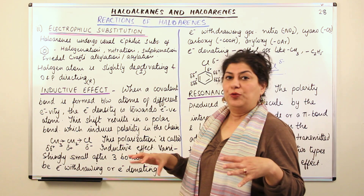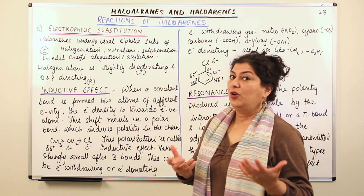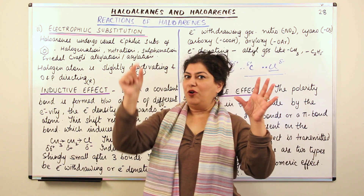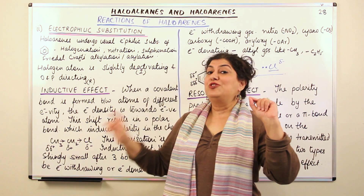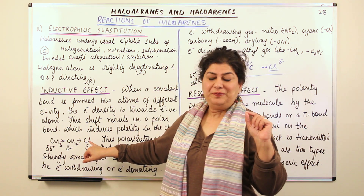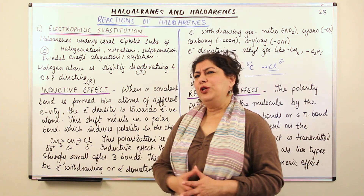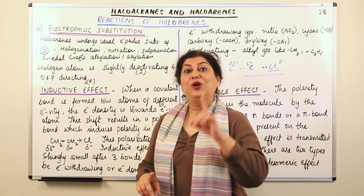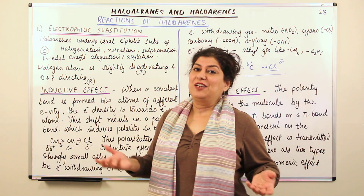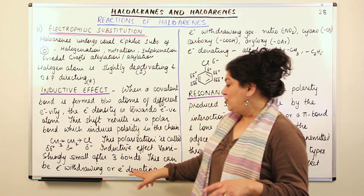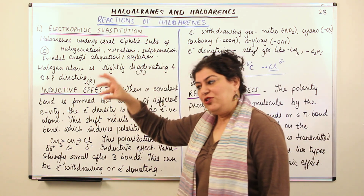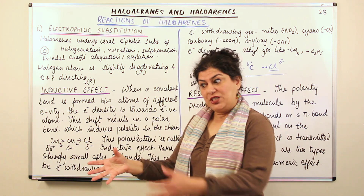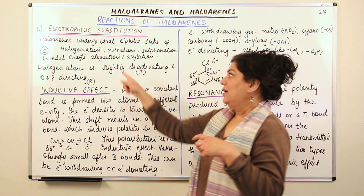The group attached to the chain could be electron-withdrawing or electron-donating. Now, from your knowledge of halogens — all halogens in the 17th group of the periodic table are highly electronegative compared to carbon. If they are highly electronegative, what do you think any halogen would be? It would be electron-withdrawing because it is electronegative. Anything that is more electronegative will pull the electrons towards itself. So when you have haloarenes, the halogen is an electron-withdrawing group.